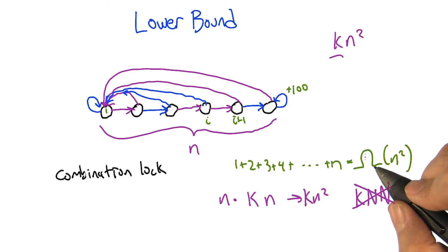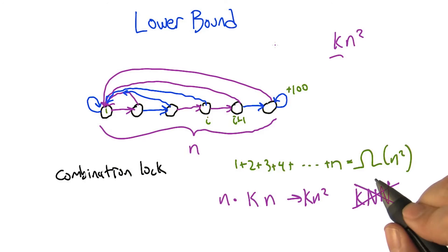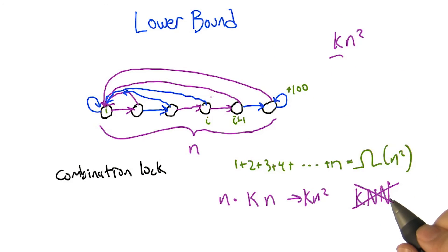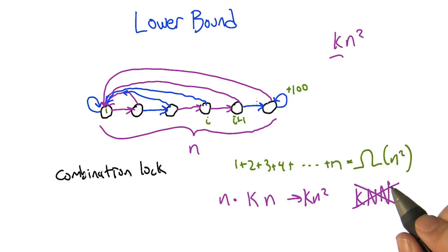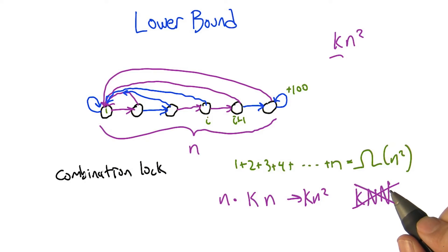So we've got this one under control. That's the argument: we really do have to take kn squared steps in the worst case in a deterministic MDP to figure out what's going on and stop making mistakes. There's no way around it, because this really is a combination lock — it's a random binary string that gets you to the end, and unless you get extremely lucky, there's no way to figure out what it is without trying all the combinations.